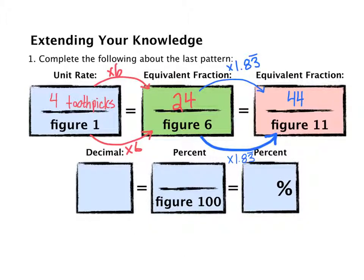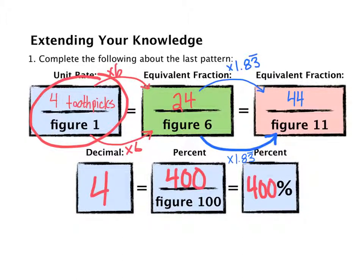As a decimal we can simplify our unit rate and we'll get 4, and as a percent that would be 400 out of a hundred or 400 percent. Again, using a percent in this context probably isn't necessary or realistic for use in the real world, however I think it's always important that we understand that a percent is just out of a hundred.